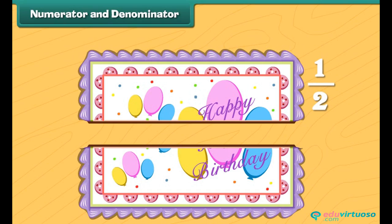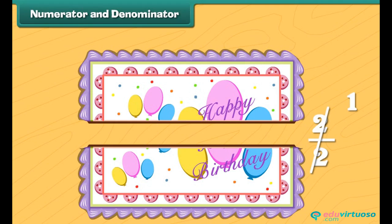And these are two halves of the cake. So, 2 divided by 2 is 1, that is, one whole cake.